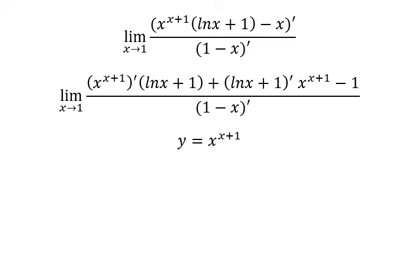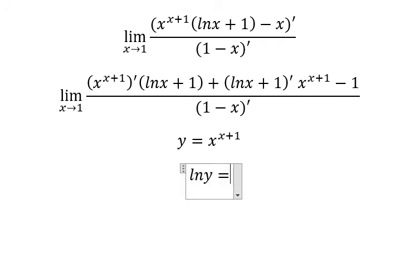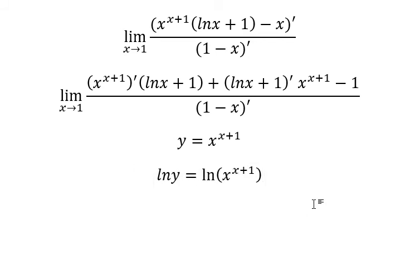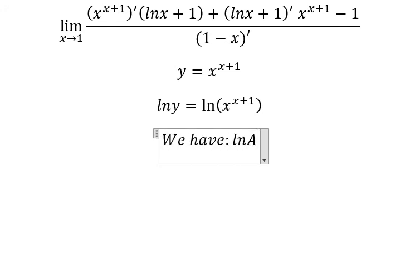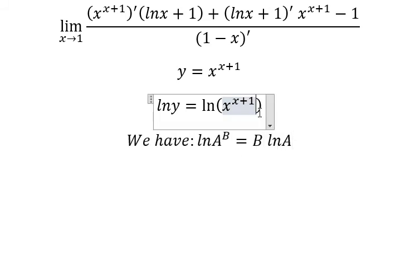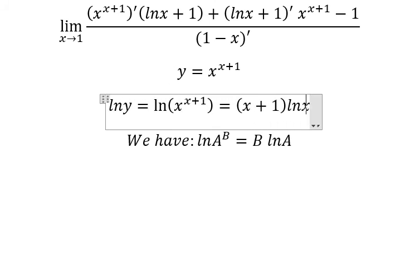We put natural log on both sides so we can apply the formula. We use the rule: ln(a^b) equals b·ln(a). So here we have x plus one times ln(x).